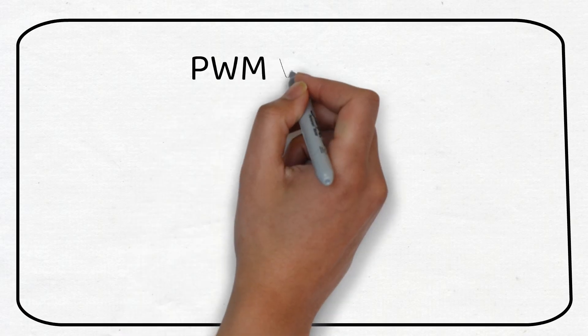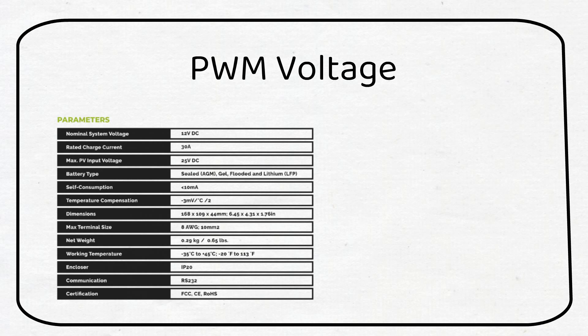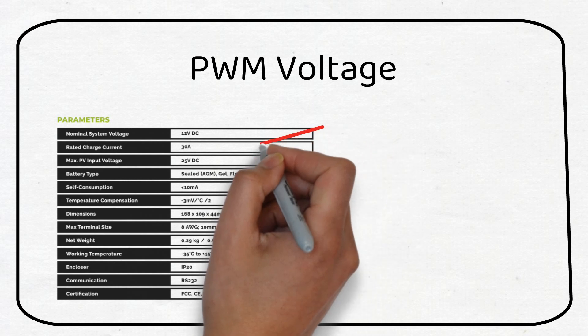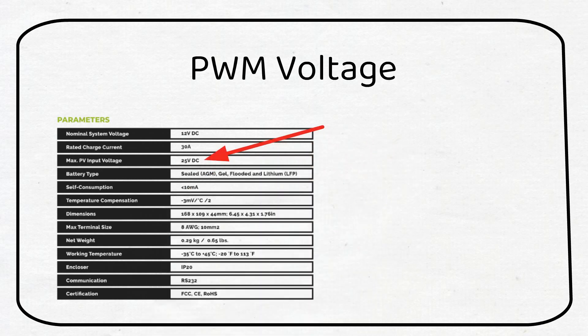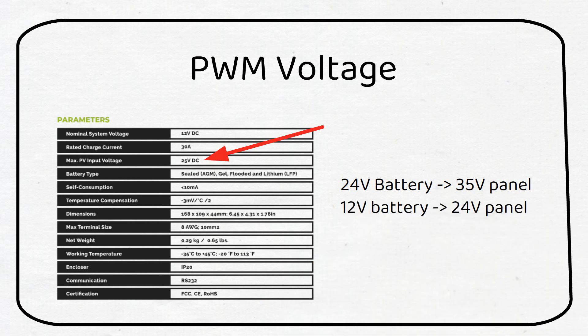The voltage of the panels is important when you choose a PWM controller. If you choose a PWM charge controller, you need to match the panel voltage closely to the battery bank. If you have a 35 volts panel and a 12 volt battery, it will not work. This is because the input voltage is too high for the PWM. If you have a 24 system, you can use a 35 volts panel.